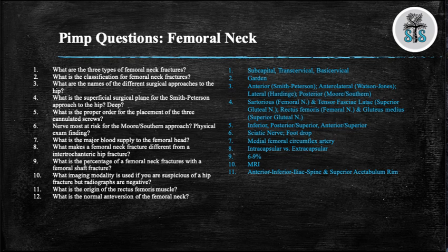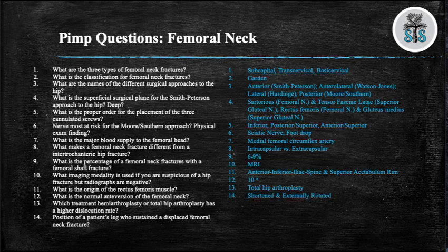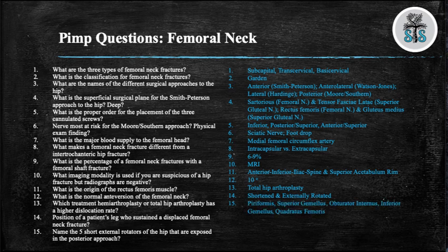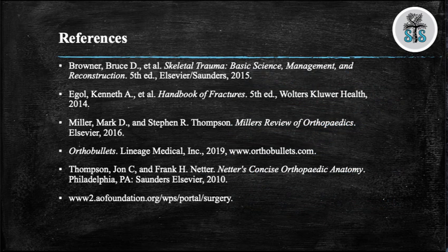Question 12: What is the normal anteversion of the femoral neck? 10 degrees. Question 13: What treatment — hemiarthroplasty or total hip arthroplasty — has a higher dislocation rate? Total hip arthroplasty. Question 14: What is the position of a patient's leg who sustains a displaced femoral neck fracture? Shortened and externally rotated. Last question: Name the five short external rotators of the hip that are exposed in the posterior approach. Piriformis, superior gemellus, obturator internus, inferior gemellus, and the quadratus femoris. And that's all for femoral neck fractures — thank you for listening and hopefully that was helpful. Be sure to give us a thumbs up or leave us a comment.